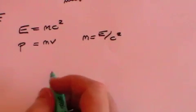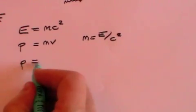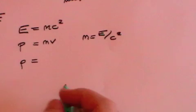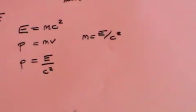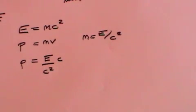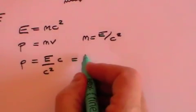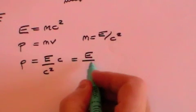Then we could say that the momentum of a photon is the kind of mass equivalent, which is E divided by C squared, multiplied by its velocity, which of course is C. And that gives us a momentum of E over C.